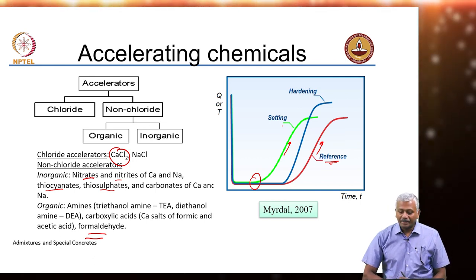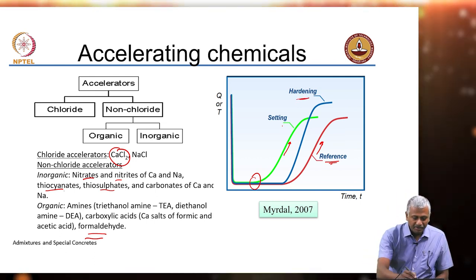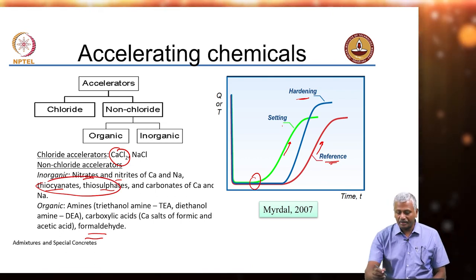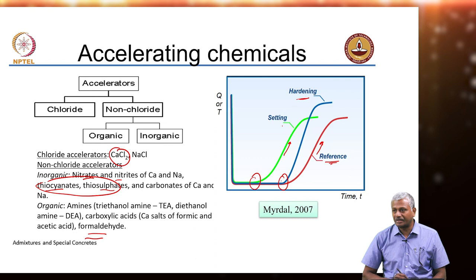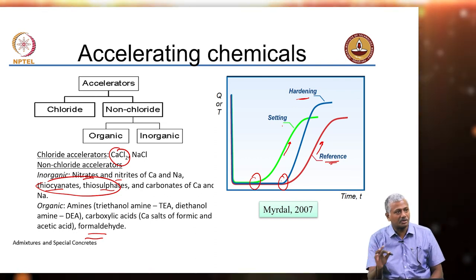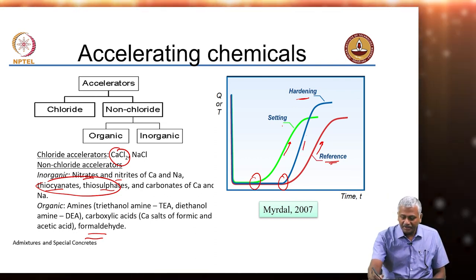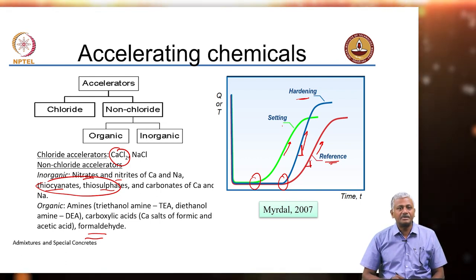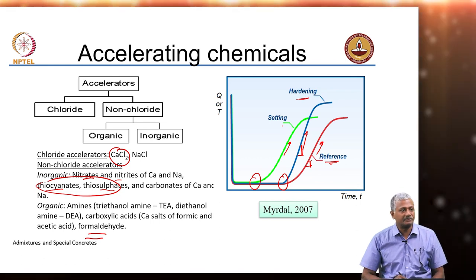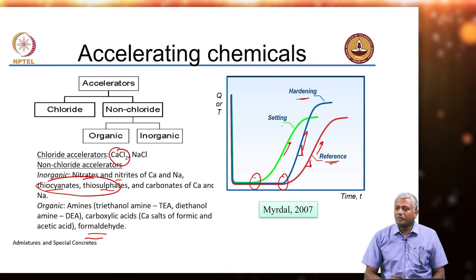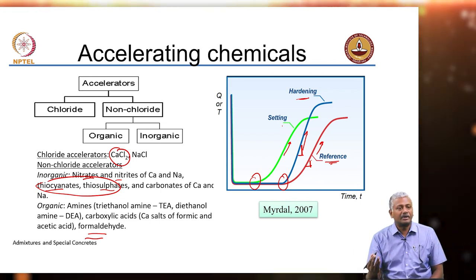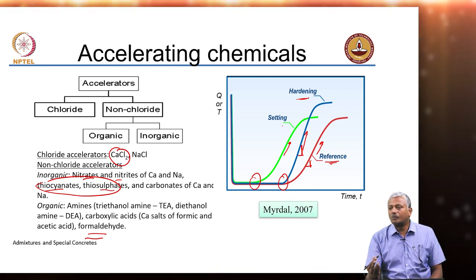On the other hand you have hardening accelerators, typically the ones which are thiocyanate or thiosulphate based, where the setting may not be affected significantly - the length of the dormant period is not getting changed much. But the rate at which setting happens or the slope of this straight line portion of the curve is significantly higher compared to the reference mix. You may want to use one or the other depending upon the type of application that you are looking at.